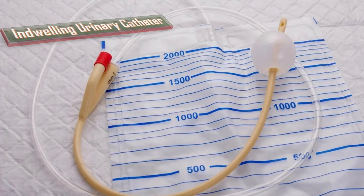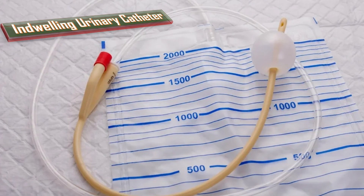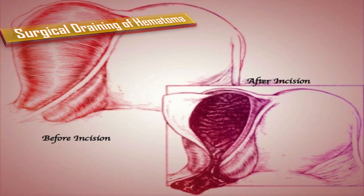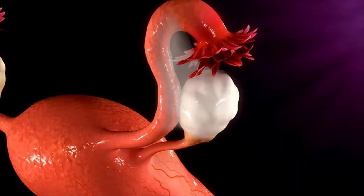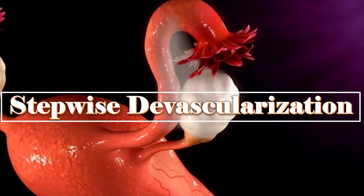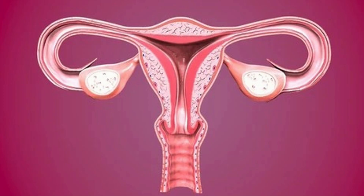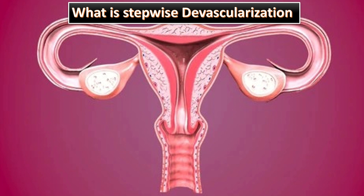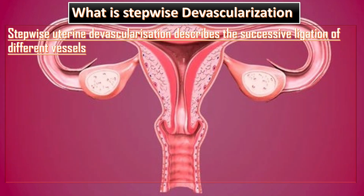Advise an indwelling urinary catheter to avoid urinary retention and for fluid balance. Surgical options for a large expanding hematoma include surgical draining of the hematoma and stepwise devascularization, in which we ligate the bleeders to prevent further expansion. Stepwise devascularization describes the successive ligation of different vessels in the management of PPH and hematoma formation.